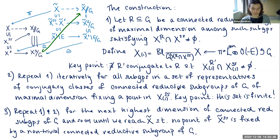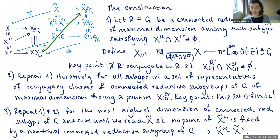Once we've done that, we pass to the next highest dimension of connected reductive subgroups fixing a point in the semi-stable locus and continue until we reach a variety X̃ such that no semi-stable point in X̃ is fixed by a non-trivial connected reductive subgroup of G. With a little work, we can show this implies the semi-stable locus for X̃ coincides with the stable locus.